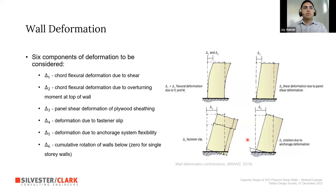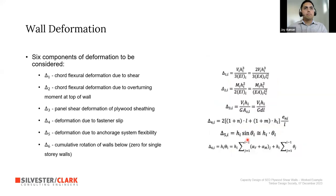Delta 1, 2, and 3 are fairly self-explanatory; the equations are provided in the Brands guide. The variables are easily obtained from the timber design standard, supplier technical literature, or from the design demands, and will be demonstrated in the worked example.